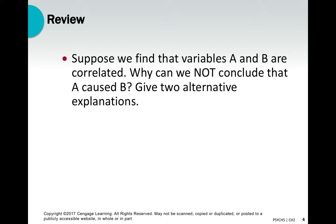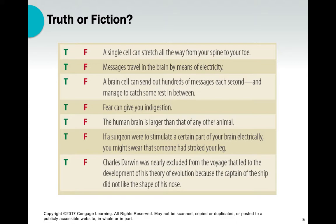We can't make causal statements with correlation research because we don't know if A caused B. Maybe it's the other way around — B caused A — or potentially there's a third variable C, and A and B are really both byproducts of C. Correlation tells you there's a relationship between two variables, but it doesn't tell you much more than that. It's a good starting point, but beyond that you'll want to dig deeper with experimental methodology where you can actually manipulate variables and control for others.